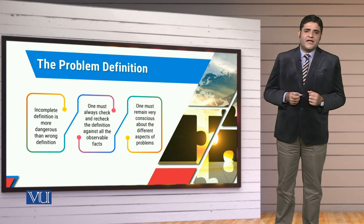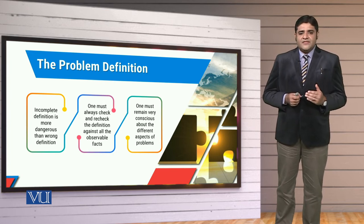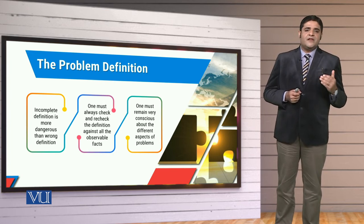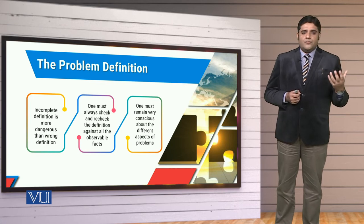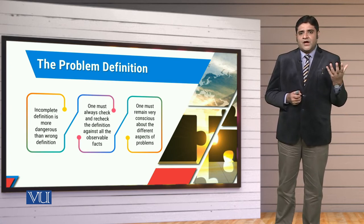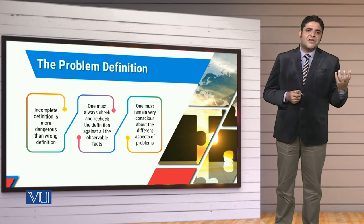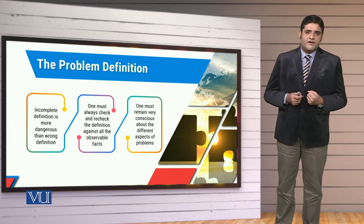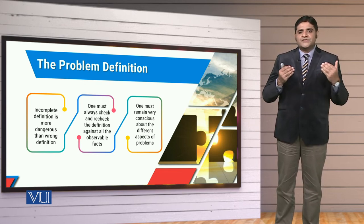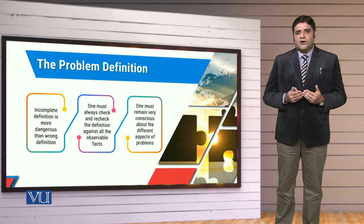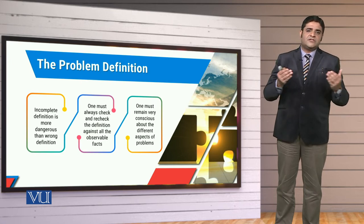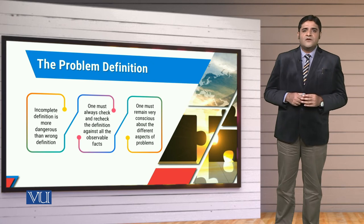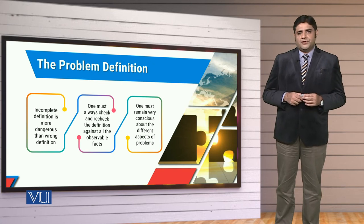Another important thing related to the problem is that one must remain very conscious about the problem aspects. Problem evolve कैसे हुआ, उस problem के अंदर कौन-कौन से stakeholders involved हैं, उस problem के साथ कौन-कौन से outcomes involved हैं — इन तमाम चीजों को आपस में integrate और associate करना बहुत जरूरी होगा।